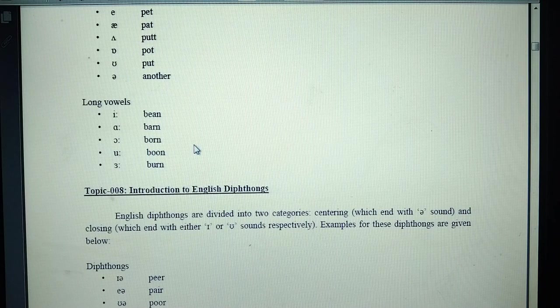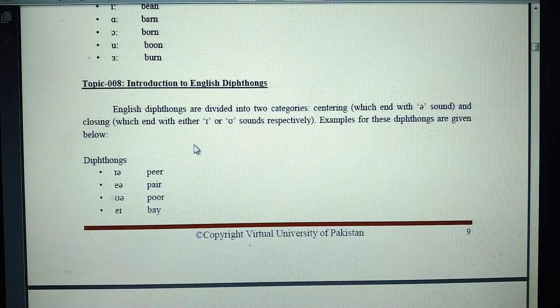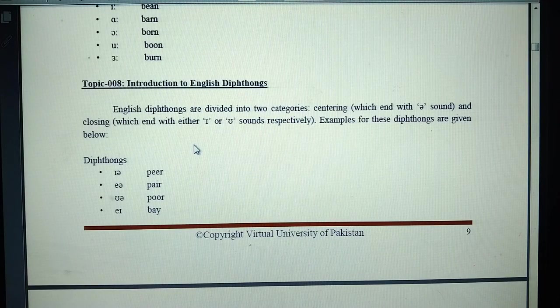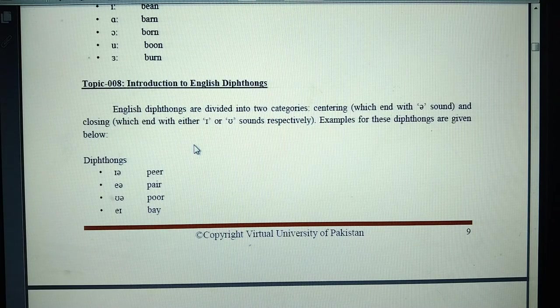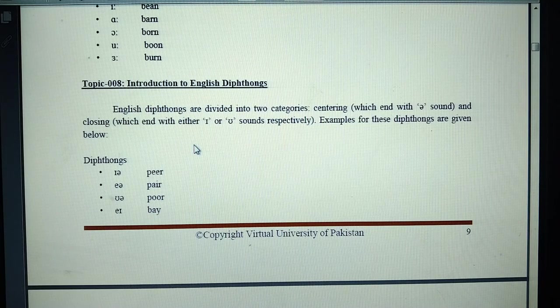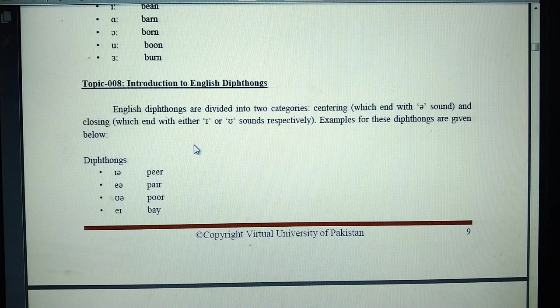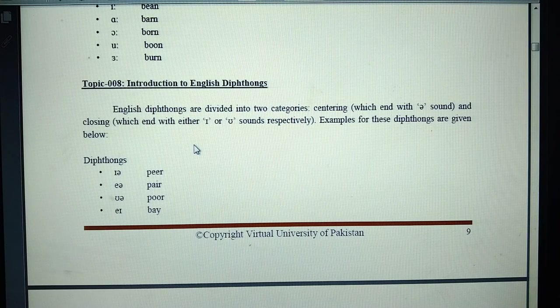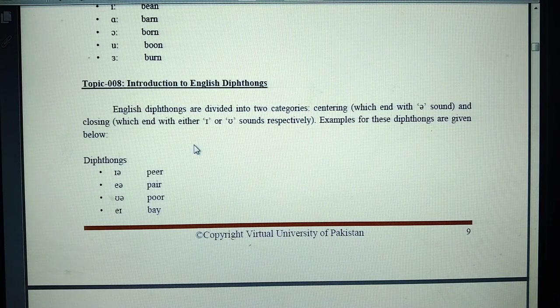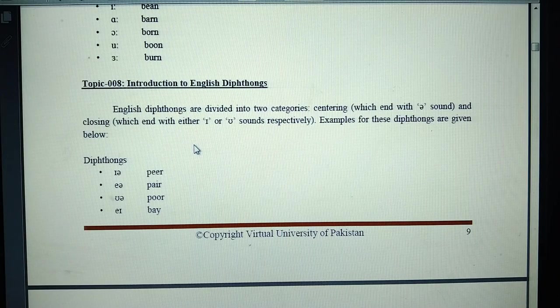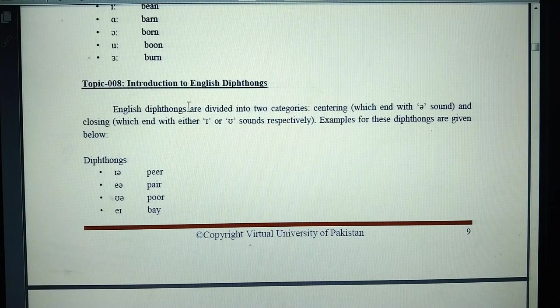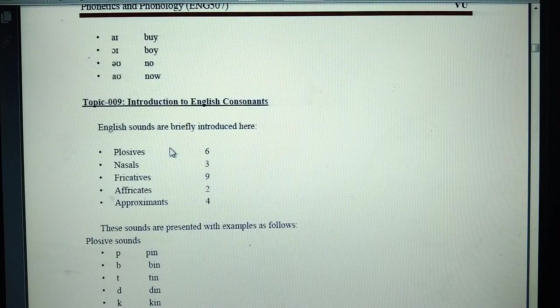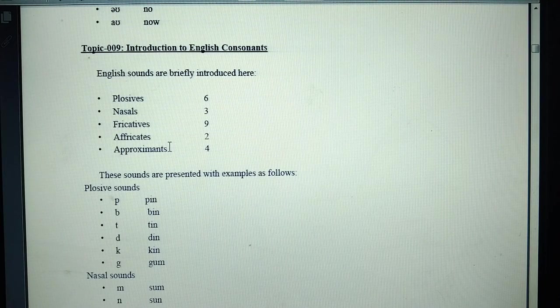Then we will discuss the introduction to English diphthongs. In English, diphthongs are divided into two categories: centering which ends with schwa sound, and closing which ends with I and U sound respectively. Examples of these diphthongs are given below. We will discuss the consonants.